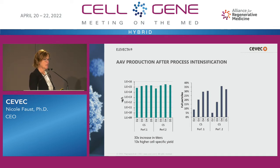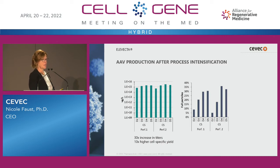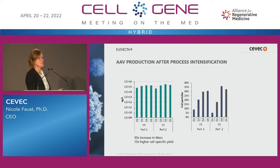We also observed that the percentage of full particles increases. When we analyze the AAV particles in the crude harvest, after about four days of perfusion run we end up with 30 to 40 percent full particles without any enrichment. We gain a lot from process intensification, and this is data generated over the last one to two years.